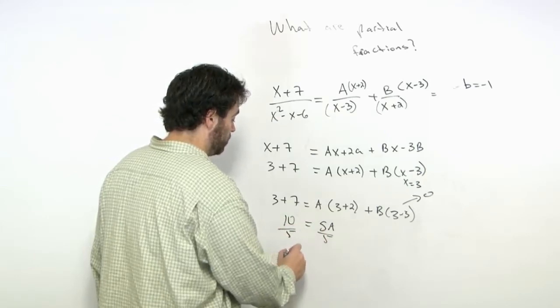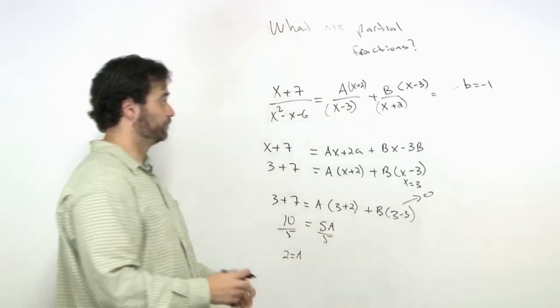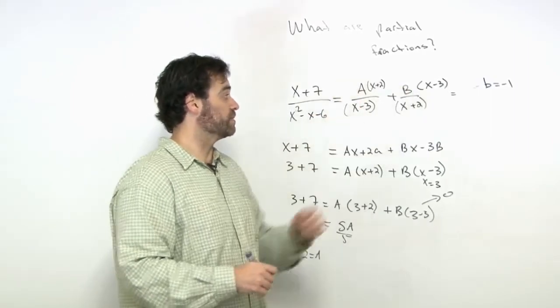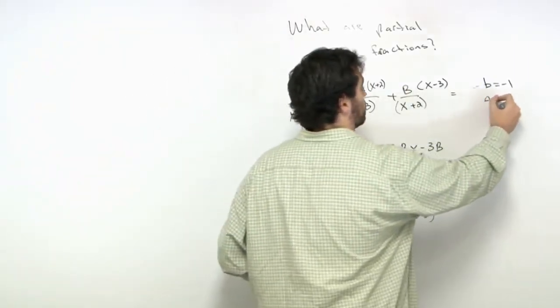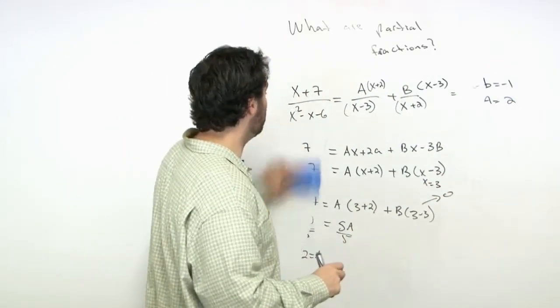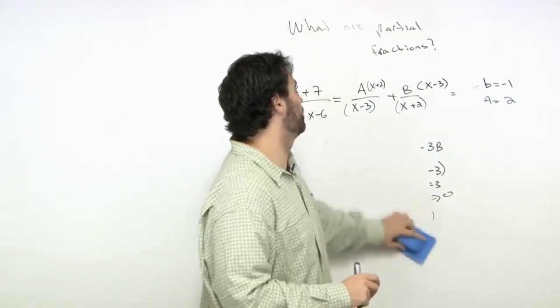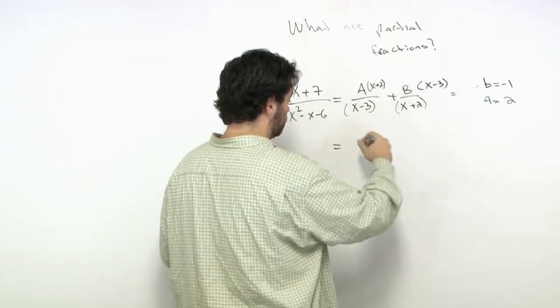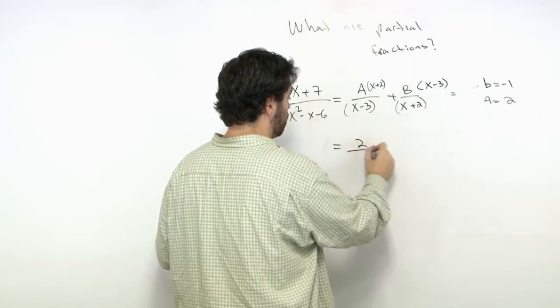Dividing by 5, we get A = 2. Going back, we replace our A's and B's. Our partial fraction is A = 2, so it's 2/(x-3)...